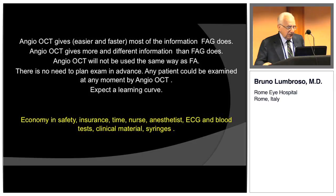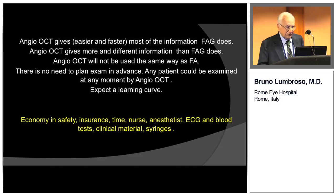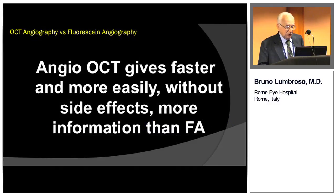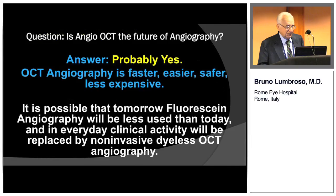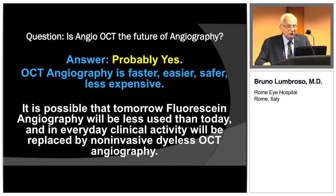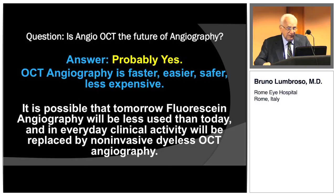Angio OCT gives faster and easier most of the information fluorescein angiography does, and it gives more and different information. AngioView will not be used the same way as fluorescein angiography because there is no need to plan an exam in advance — any patient can be examined at any moment. Angio OCT gives us economy in safety, insurance, time, nursing, anesthesia, ECG, blood tests, clinical materials, and syringes. Is Angio OCT the future of angiography? Probably yes — it is faster, easier, safer, and less expensive, and may replace invasive, dye-based fluorescein angiography in everyday clinical activity.